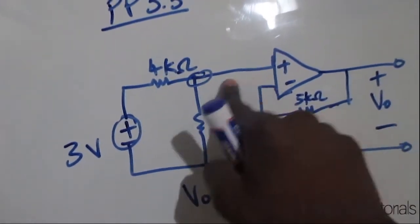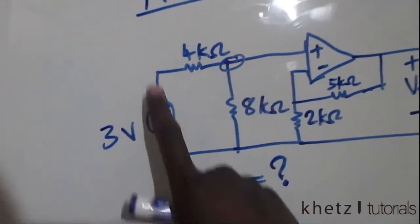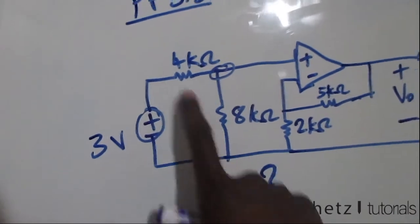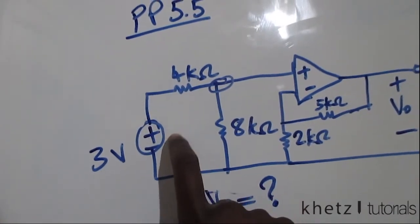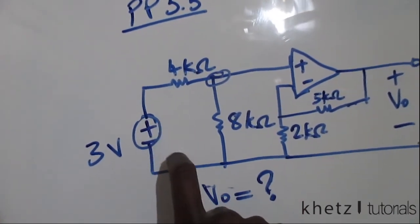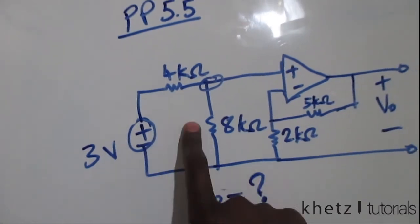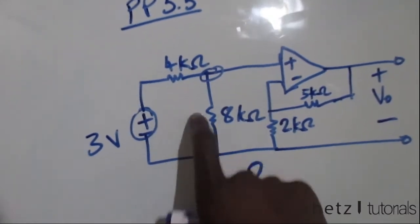At this point there isn't any current flowing here, which means we can look at this circuit as being in series. All of these elements are in series and therefore we can do voltage division.